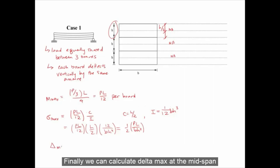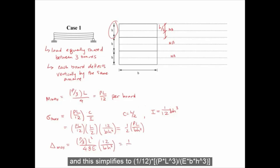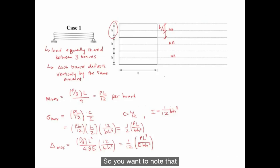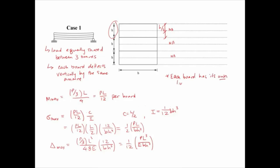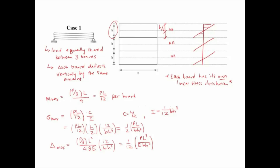For the maximum deflection at mid-span in case one: delta max equals (P/3)·L³ over 48E, with I equal to (1/12)BH³ in the denominator. This simplifies to (1/12)·PL³/(EBH³). We can also draw the bending stress distribution over the beam section, noting that each board has its own individual linear stress distribution.